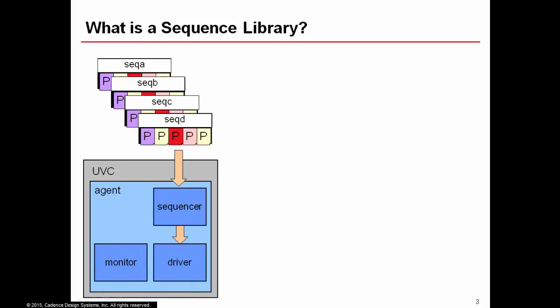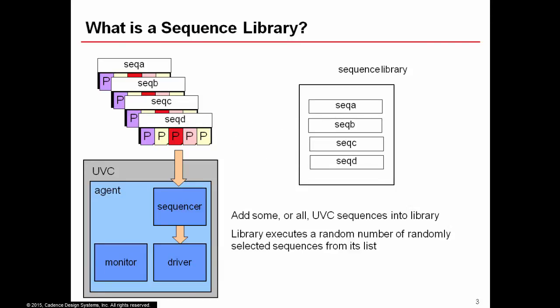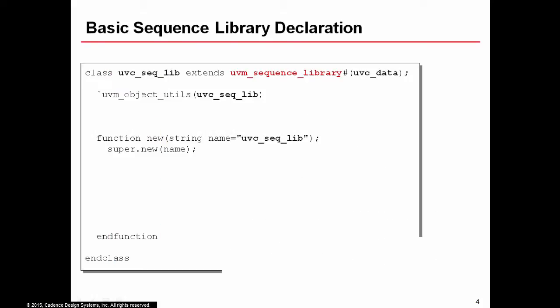A sequence library is defined for a UVC with a number of sequences — SeqA to SeqD — written for the sequencer of the UVC. You define a sequence library and add some or all of those UVC sequences into it. The library will then pick a random number of randomly selected sequences from those in the library and execute them. Both the number of sequences executed and the selection mode are by default random, but you can customize both.